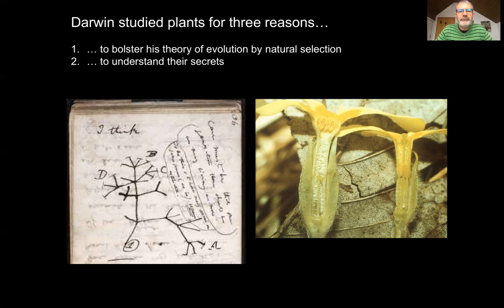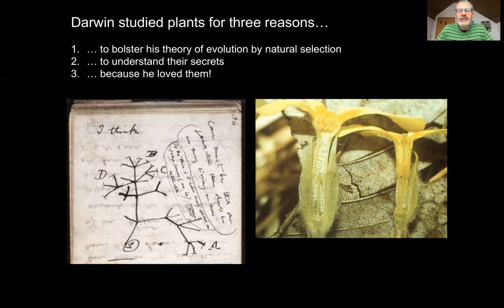We can probably conclude that Darwin studied plants for three main reasons. First, to bolster his theory of evolution by natural selection — he used plants as evidence for the ideas central to his theory. Second, he was actually interested in understanding plants themselves, using his ideas about evolution to understand their adaptations. And thirdly, he studied plants because he loved them — he became incredibly fascinated by them as he matured as a scientist, a fascination that started very early on in his scientific career.